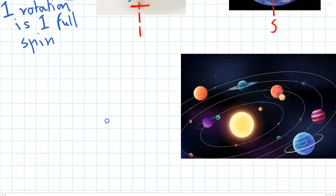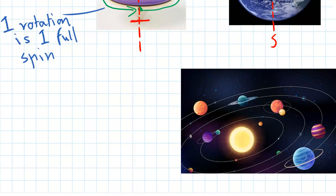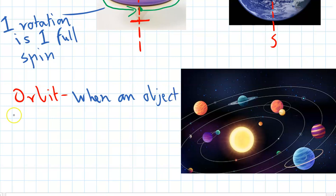So the next thing to look at is orbit, that's the next word we need to know. So orbit, an orbit is where an object follows a circular or an oval shaped path around another object. And this happens with lots of objects in space, particularly planets, as we can see here in the solar system, so we'll look at that in a second.